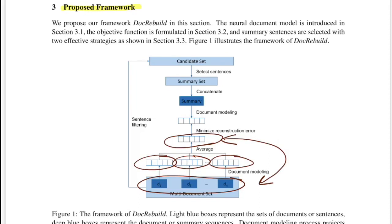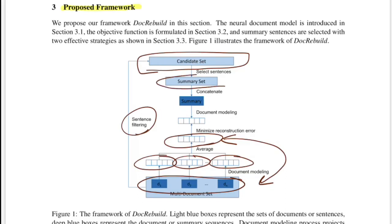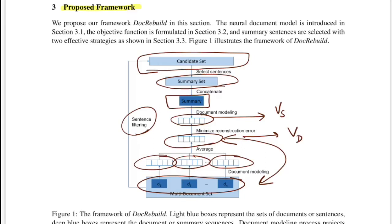On the other side, you have a system that does sentence filtering, using which you calculate a candidate set of candidate sentences. Once you have that, there is a mechanism to select some sentences from those candidates to form a summary set. You concatenate all the sentences from that set to get your summary, then apply the document model — a vectorization technique — to get a vector representation VS for that summary. This is VS, and the other is VD. You calculate the reconstruction error — how close these vectors are — and that score S drives you to choose sentences such that VS and VD are close and S is as close to 0 as possible.